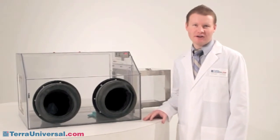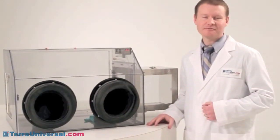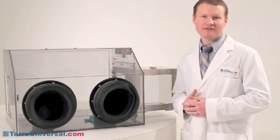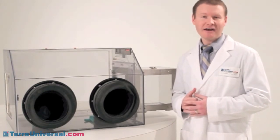Terra Universal's smart glove box provides a sealed enclosure for manipulating moisture sensitive parts. It includes a built-in smart control system that automatically turns a nitrogen supply line on when you need it and off when you don't.